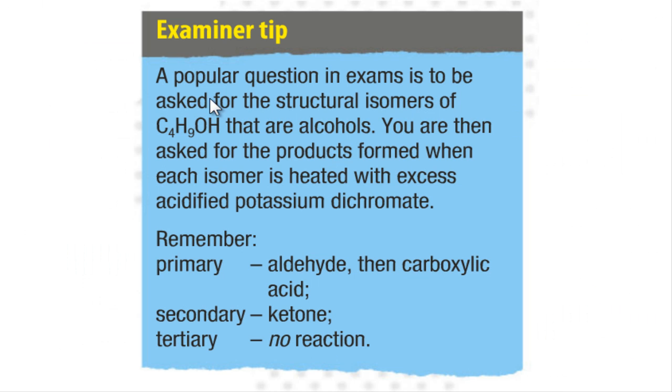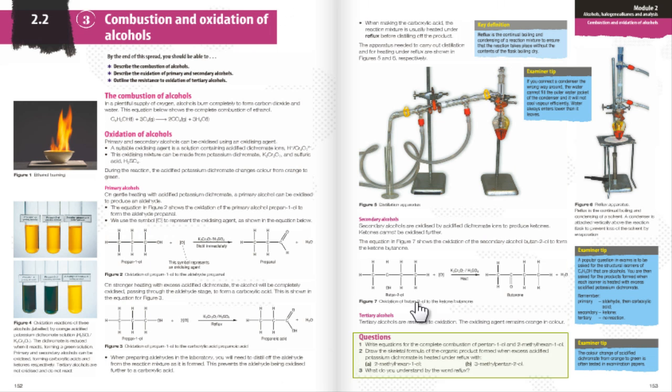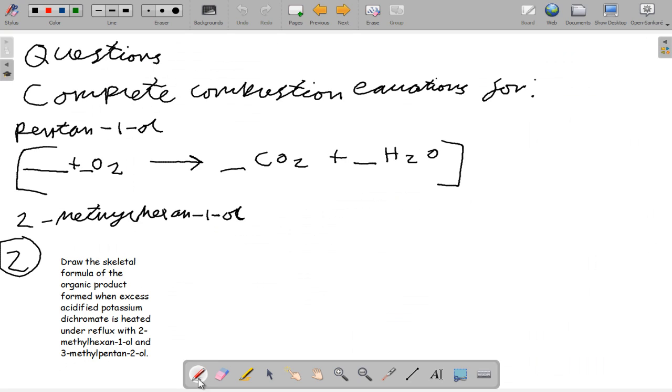Another thing to add here: remember that the primary alcohols form aldehydes and then a carboxylic acid. Secondary only form ketones, but tertiary alcohols have no reaction. If you can't quite remember what primary, secondary, or tertiary alcohols are, look up the previous tutorial that I posted on the different types of alcohols.